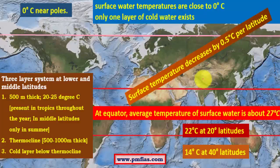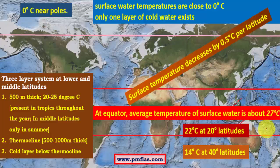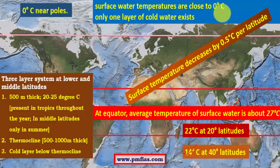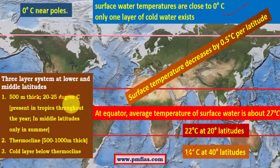Coming to horizontal distribution, at the equator the temperature is uniform at about 25 to 27 degrees Celsius — the equator receives the highest amount of insolation. Temperature falls significantly towards the tropics, reaching around 20 degrees Celsius near the Tropic of Cancer and Capricorn, with differences between northern and southern hemispheres due to land-water contrast. At 40 degrees latitude it is about 14 degrees Celsius, and near the poles it approaches zero degrees Celsius. For the vertical three-layer system: the first layer is about 500 meters thick with significant temperatures, then the thermocline where temperature fall is very sharp, and then the cold layer below the thermocline.